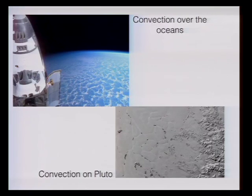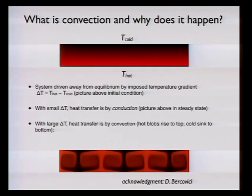Why does it happen? If you're heating a surface from below and cooling it on top and you wait, almost all substances expand when heated and become more buoyant. So they want to rise and the top stuff wants to sink. You can get convective cells with hot blobs rising to the top and cold stuff coming down. This is a simple laminar flow that you might get in a very viscous fluid.